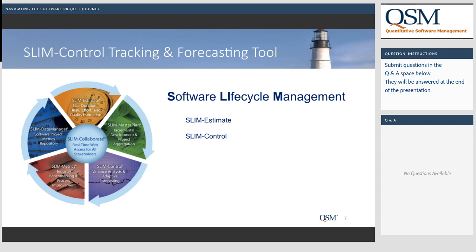For over 45 years, QSM's SLIM Suite of applications has helped thousands of organizations manage software projects throughout the life cycle. I'm going to focus on two products today: SLIM Estimate and SLIM Control, mostly SLIM Control. Our methodology is top-down, scope-based, and it models the nonlinear behavior of software projects. SLIM Estimate solves the problem of moving companies away from goal-based estimates toward data-driven ones. SLIM Control solves the problem of tracking actual data so you can see how it lines up to the plan and tells you where you'll end up.